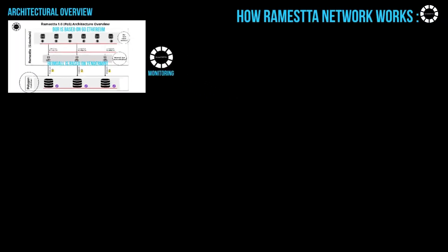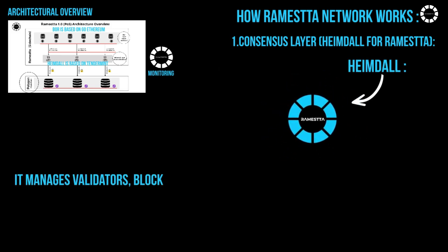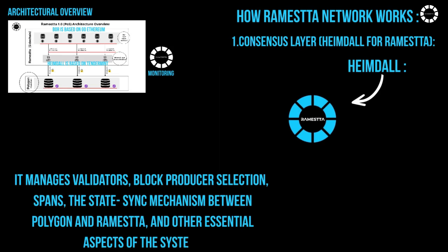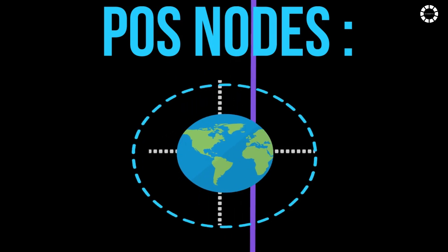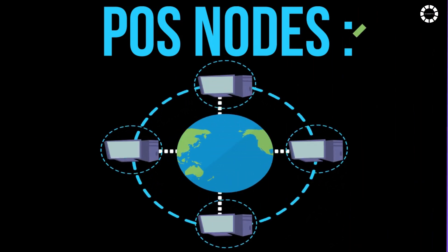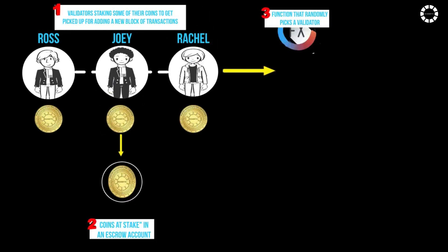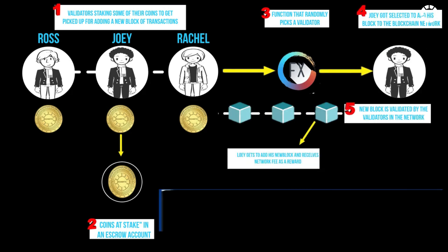Heimdall is the heart of the Romesta network. It manages validators, block-producer selection spans, the state sync mechanism between Polygon and Romesta, and other essential aspects of the system. POS nodes are computers in the network that participate in the proof-of-stake consensus mechanism. They validate transactions and create new blocks based on the amount of Rama coin they hold and are willing to stake as collateral. POS nodes are specifically configured to monitor staking contracts on the Polygon mainnet.